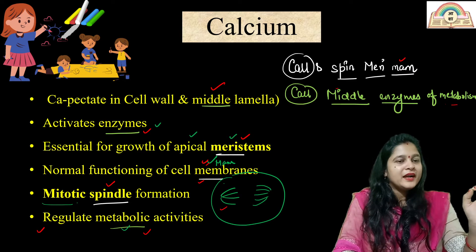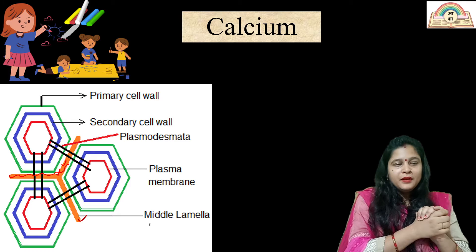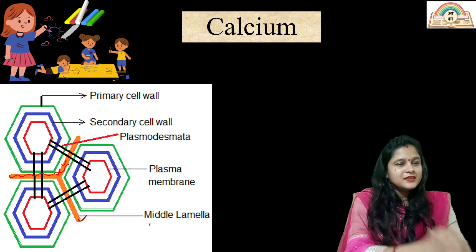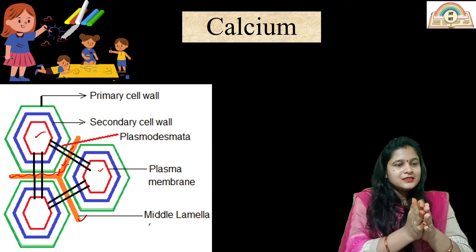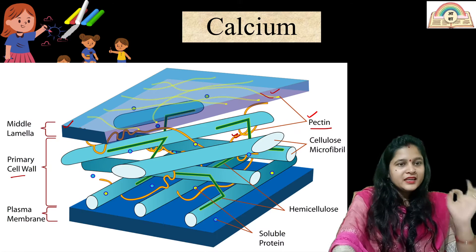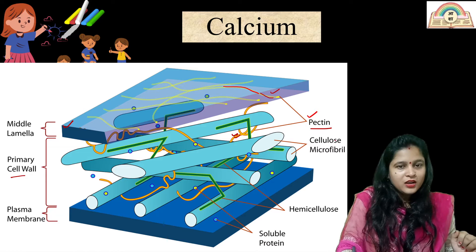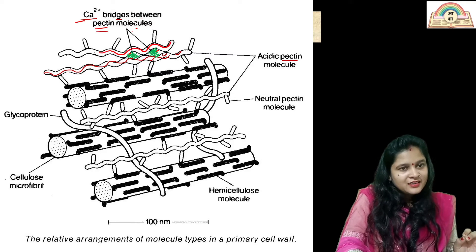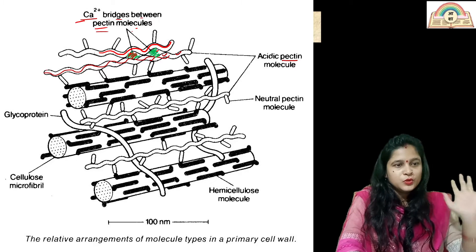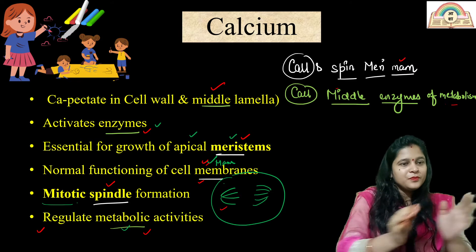Calcium is required in the form of calcium pectate in the cell wall and middle lamella. The middle lamella is the cement between adjacent plant cells — like cement between two bricks. In the diagram, you can see the pectin threads (yellow) and calcium bridges between pectin molecules in the middle lamella and cell wall.